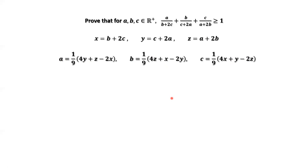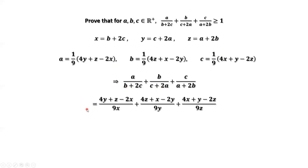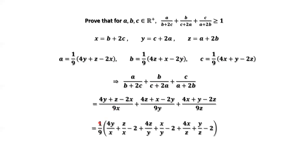Now we are ready to rewrite the left-hand side of this inequality in terms of X, Y, Z. We replace A, B, C by these three expressions. The denominators are X, Y, Z. The 9 in the denominator is a common factor, so we factor 9 out to get 1 over 9. We split each term into three parts — for example, the first term: 4Y divided by X, Z divided by X, and negative 2X divided by X equals negative 2. Similarly for the second and third terms.